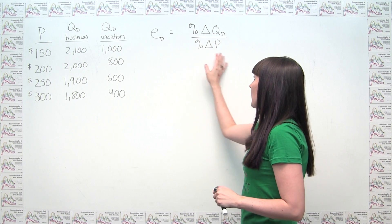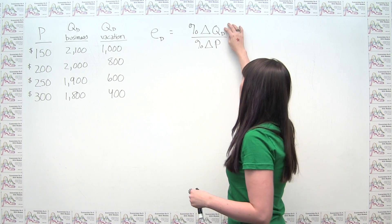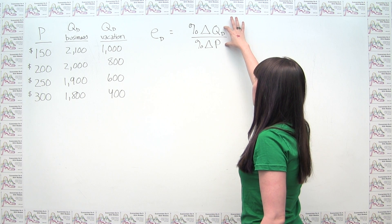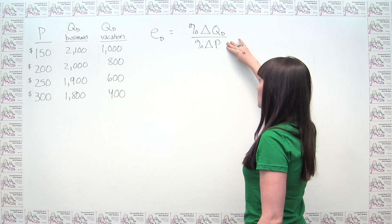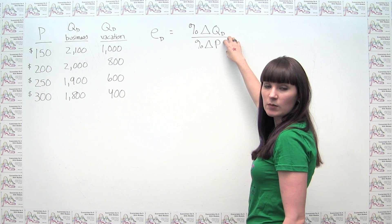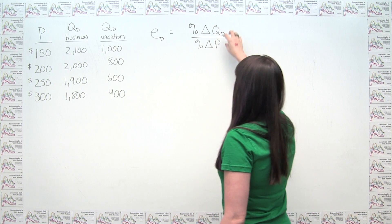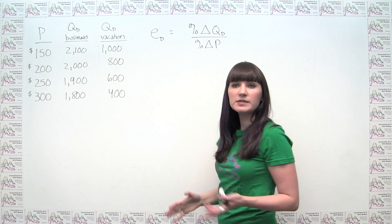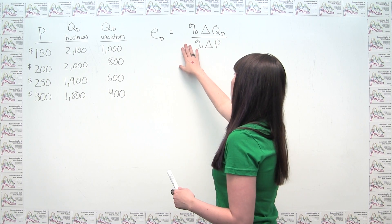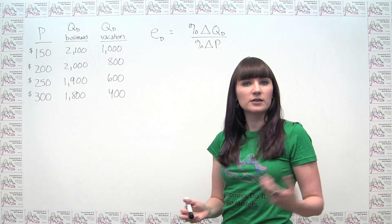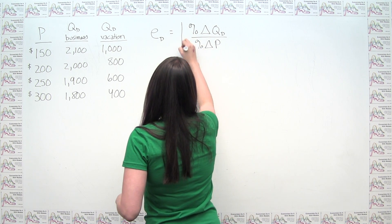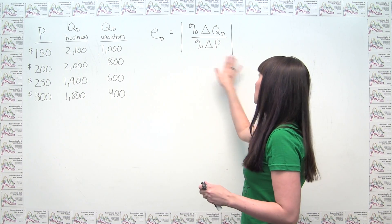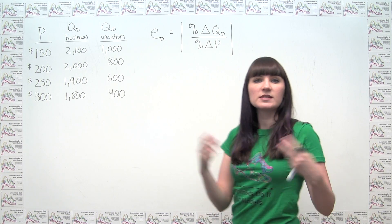You've probably noticed that demand curves slope downwards, so quantity demanded and price are always moving in opposite directions. That means for elasticity we're always going to have a ratio of either a negative number to a positive number, or a positive number to a negative number. Some textbooks say let's just simplify this — since we know we're always going to get a negative number, let's just report the absolute value. Depending on your textbook or course, you may or may not do this last step.